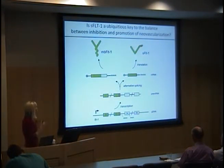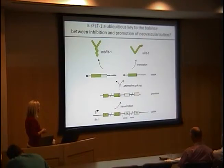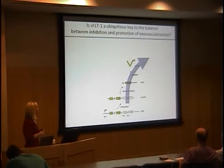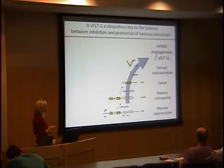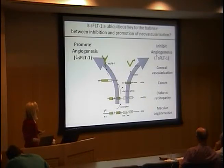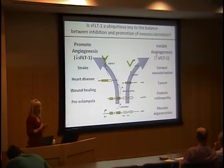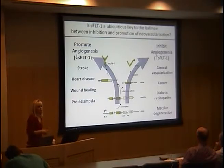Based on this, is it possible that the expression of soluble FLT1 could represent a way to modulate angiogenesis such that we could alter pathology? For example, if we increase soluble FLT1, thereby inhibiting angiogenesis, could we modulate disease states such as corneal vascularization and solid tumor development? Alternatively, by decreasing soluble FLT1 and promoting angiogenesis, could we modulate disease states such as stroke, heart disease, and wound healing — things that would benefit from more vessel growth?